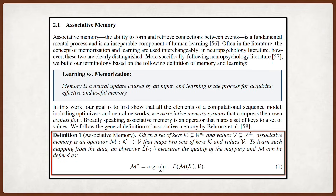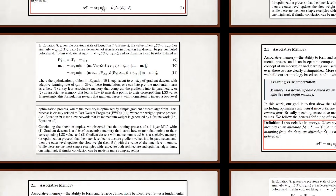From this NL perspective, they show that all core elements of a computational sequence model, including optimizers and neural networks, are effectively associative memory systems designed to compress their own context flow.